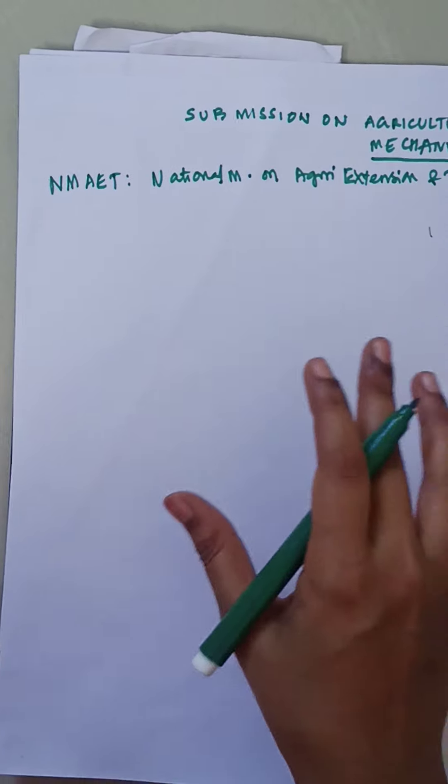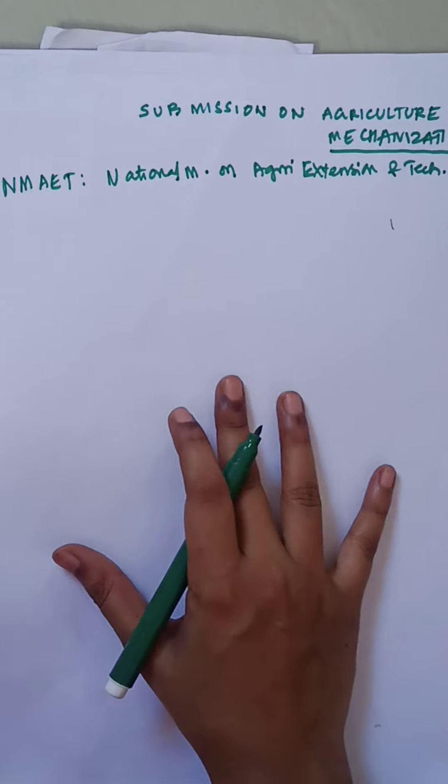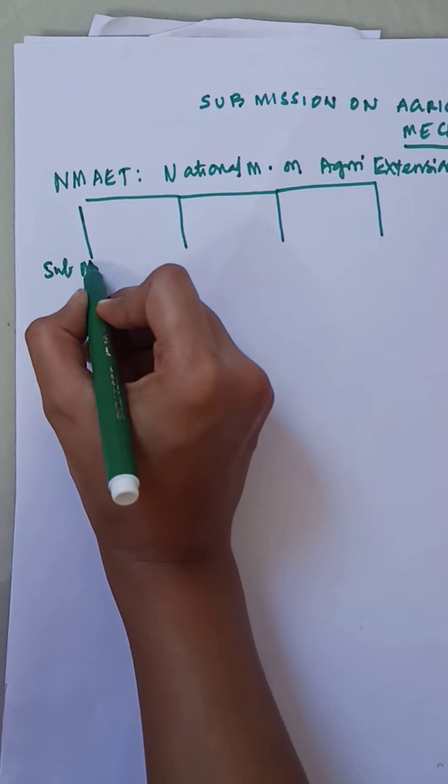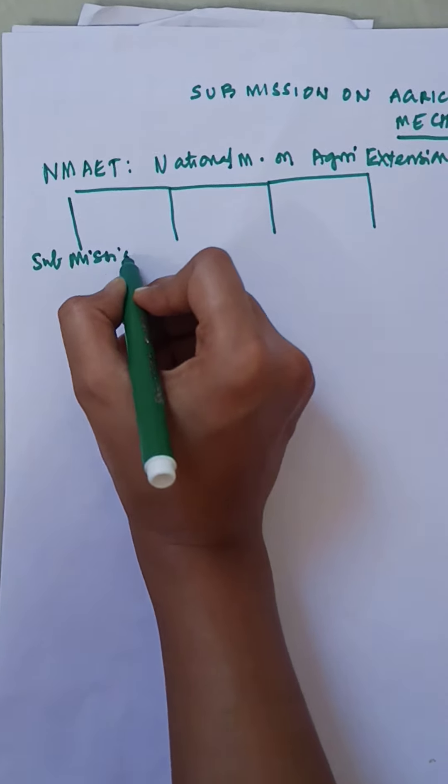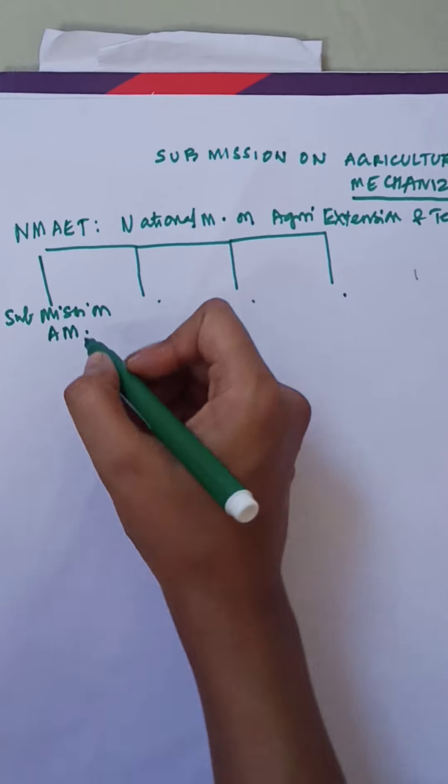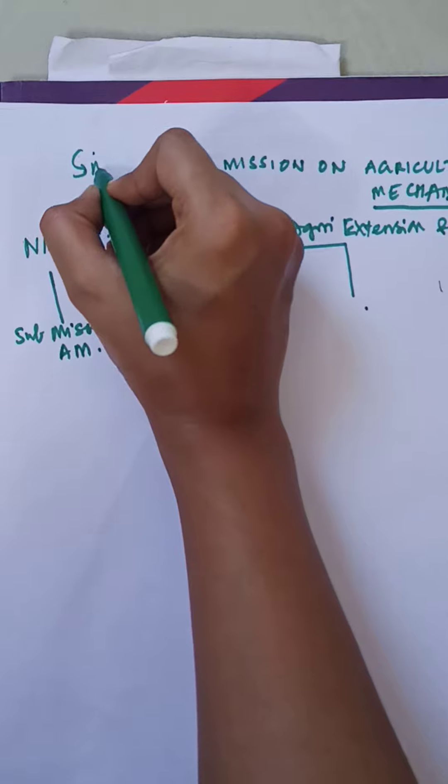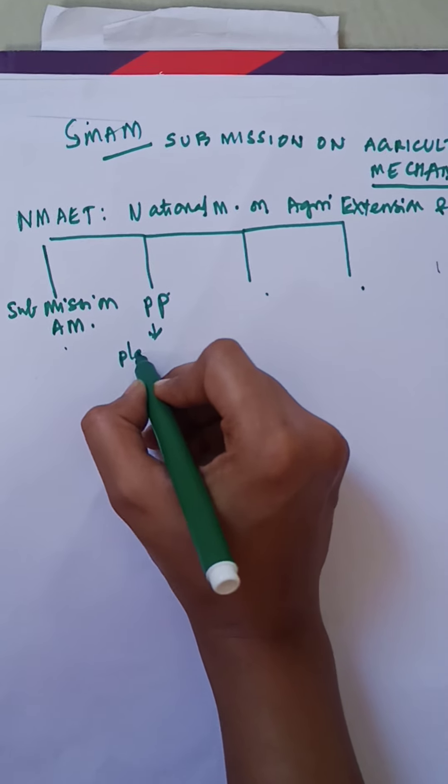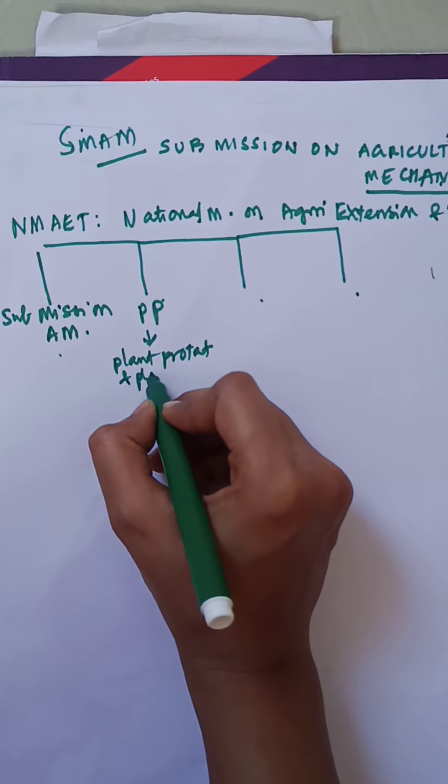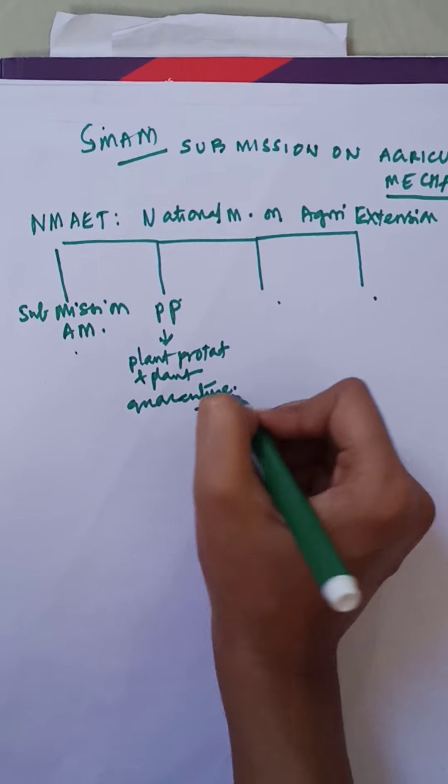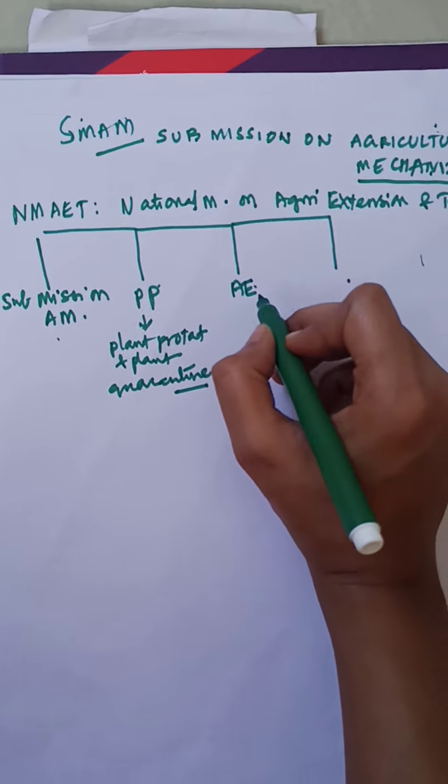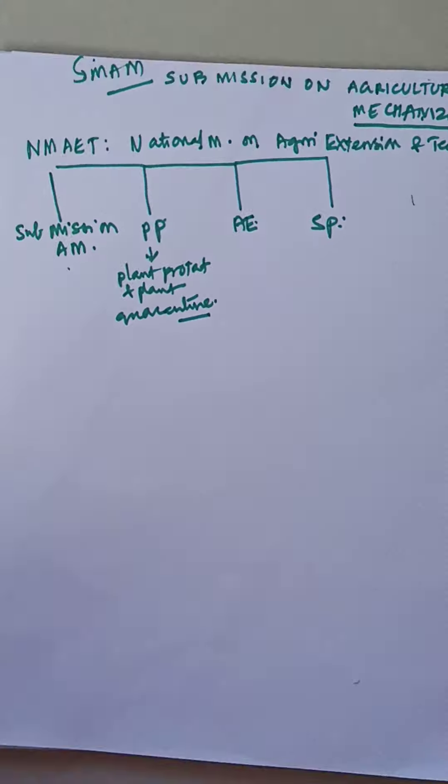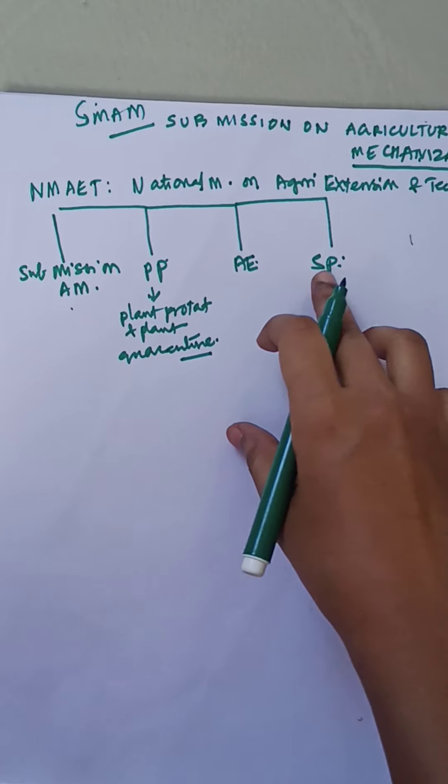The mission has four sub-missions. Sub-Mission AM is Agriculture Mechanization (SMAM). PP is Plant Protection and Plant Quarantine. AE is Agriculture Extension. SP is Seeds and Planting Materials. So today, we will focus on these four sub-missions.